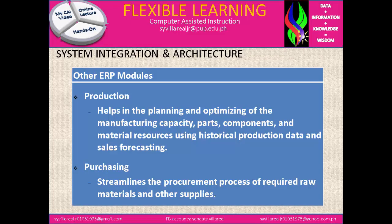Other ERP modules. We have production, which helps in the planning and optimizing of the manufacturing capacity, parts, components, and material resources using historical production data and sales forecasting. Next is purchasing, which identifies and streamlines the procurement process of required raw materials and other supplies.